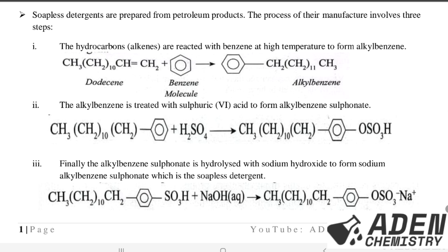The alkene chosen is dodecene, which has 13 carbon atoms. The formula for an alkene is CnH2n, so for C13 it is C13H26. The condensed structural formula can be written either in full or in the shorthand form. Dodecene plus benzene, when reacted at high temperature, produces alkyl benzene.